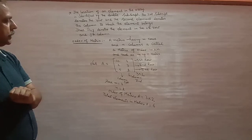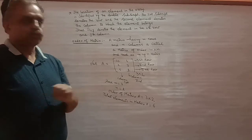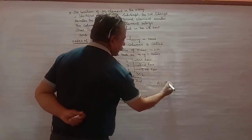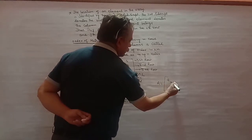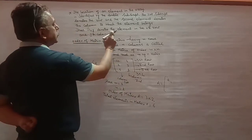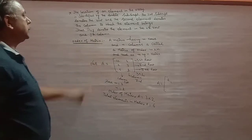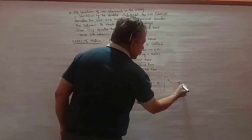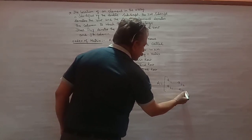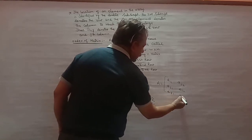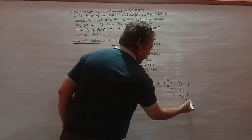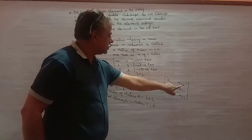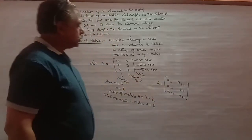अब question यह होता है कि हमें कोई matrix बनानी है, तो in general उसको हम कैसे लिखेंगे? A[i][j] denotes the element in the i-th row and j-th column, means i stands for row and j stands for column. तो यहां पर A11, A12, A21, A22, A31, A32 — जो इस given matrix के elements हैं।